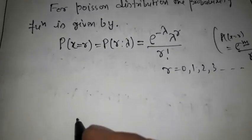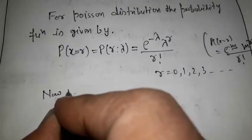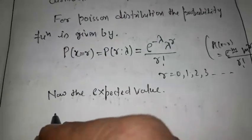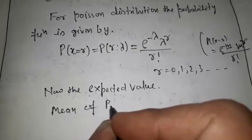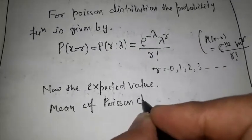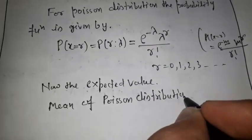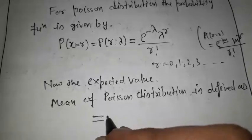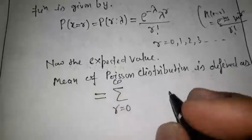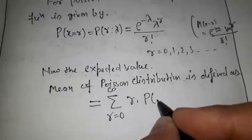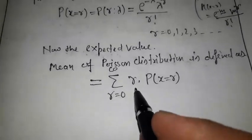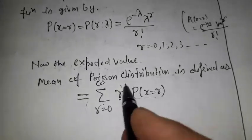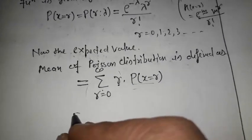That is the number of successes. Now the expected value, which is called the mean of the Poisson distribution, is defined as: mean equals summation r from 0 to infinity of r into p(x = r). If we multiply the probability of each number of successes and sum them, we get the mean.